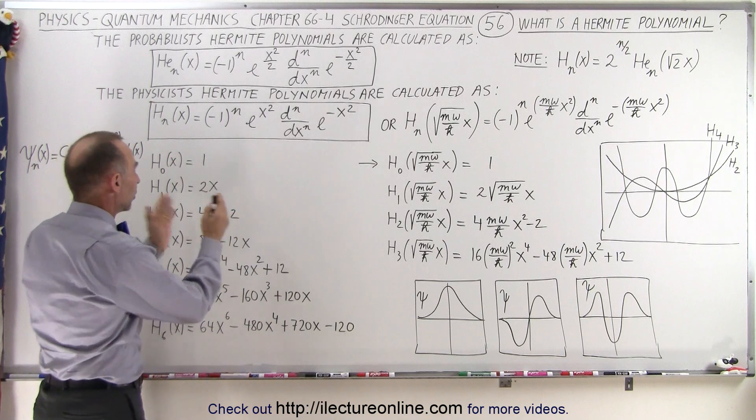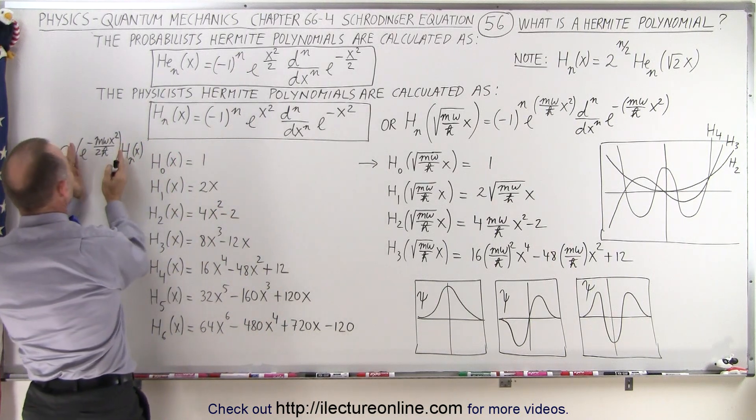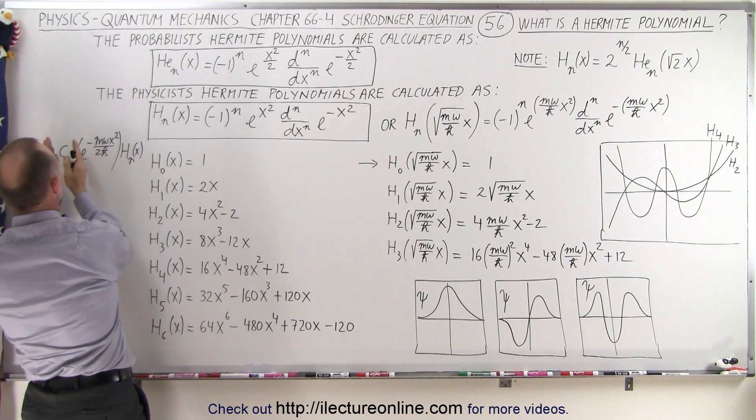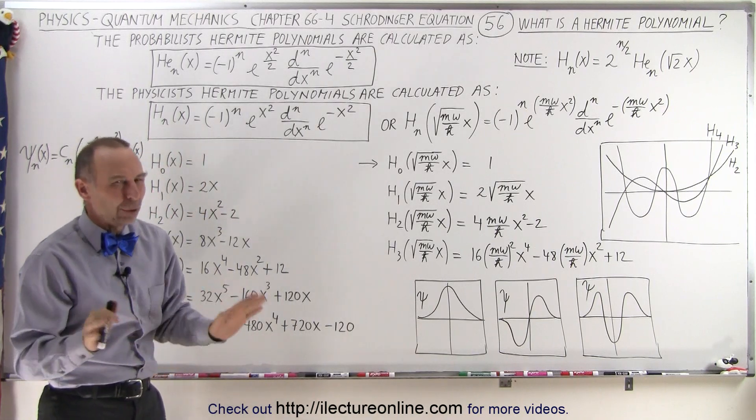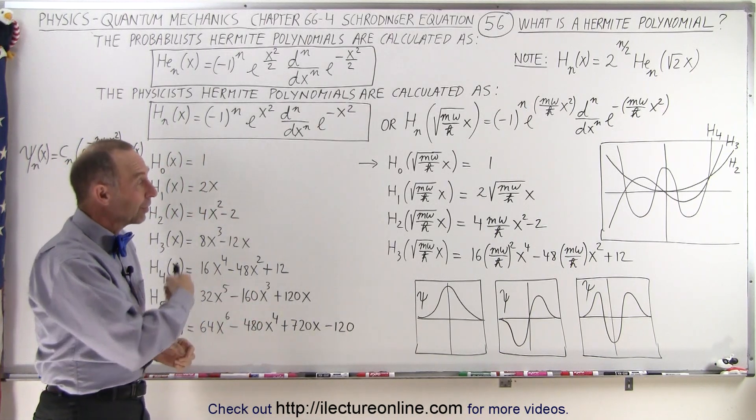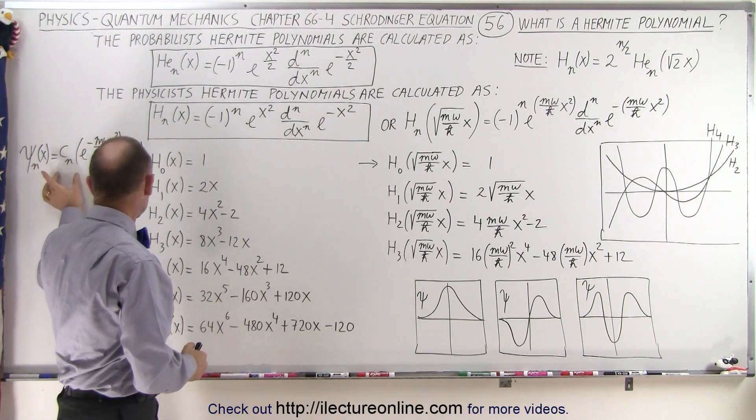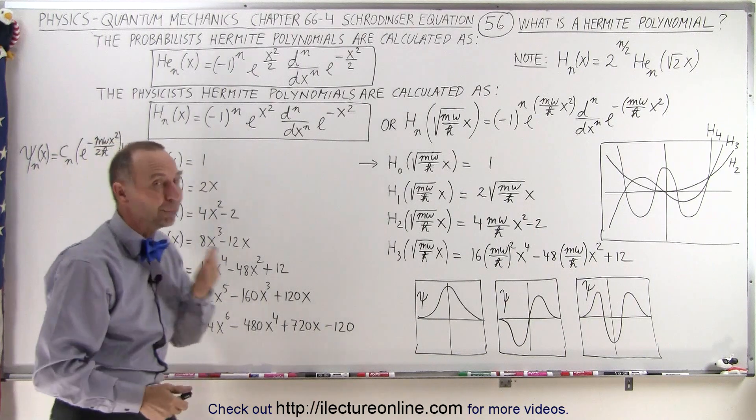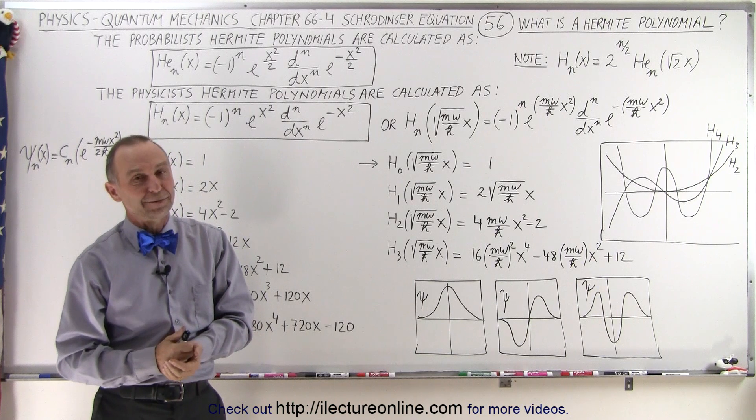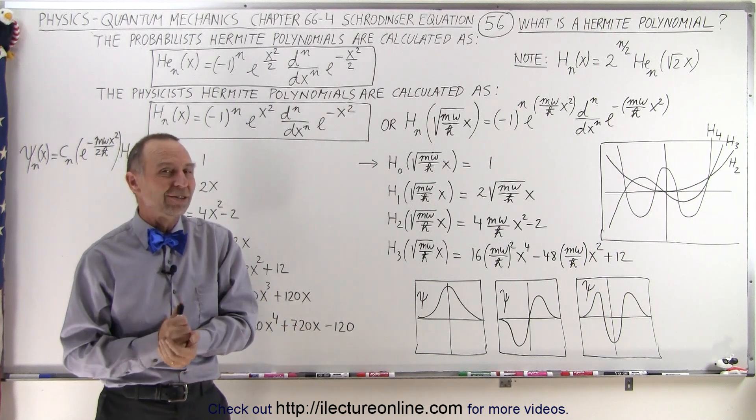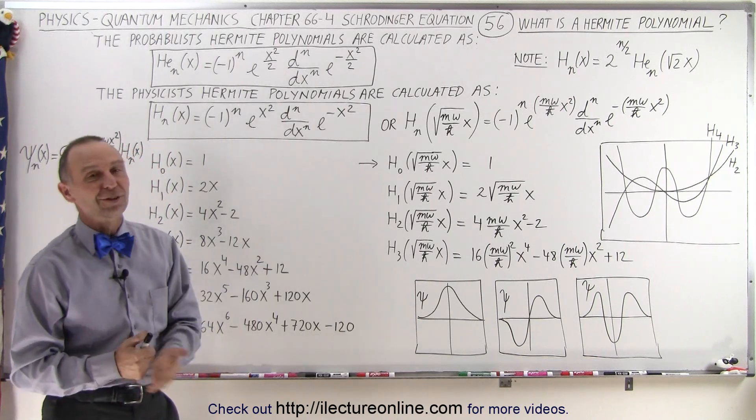Then, all we need to do is multiply the Hermitian polynomial for the particular quantum state, multiplying times the exponential function, and then normalize the function to get the proper c sub n for each quantum state as well. I know that at this point it probably doesn't make a lot of sense yet, but in the next video when I show you how to derive these polynomials and normalize the function, we'll get a complete set of solutions for the quantum mechanic oscillator. Yes, it's not easy to get there, but with a few more videos, we'll eventually get there. So stay tuned, and eventually this will all make sense.